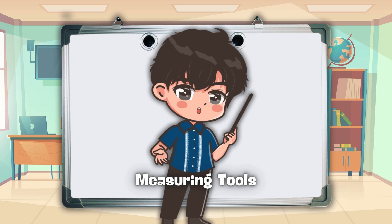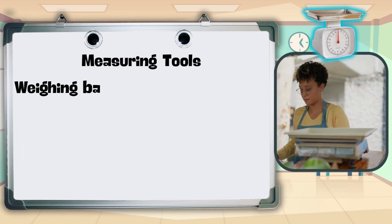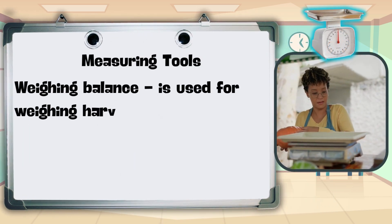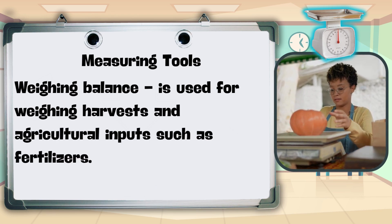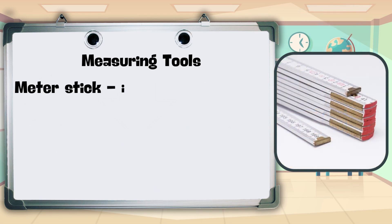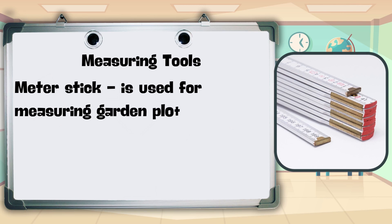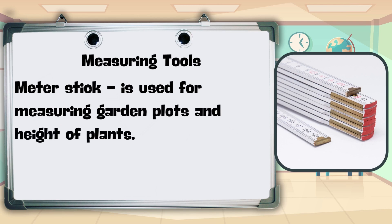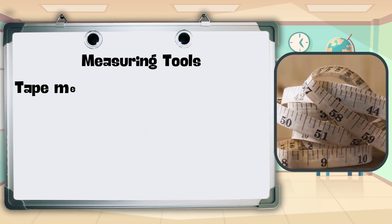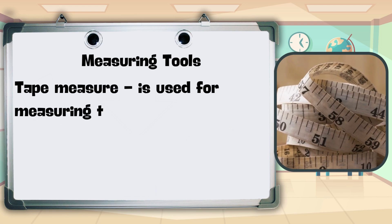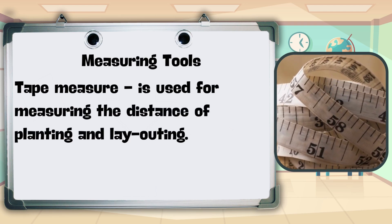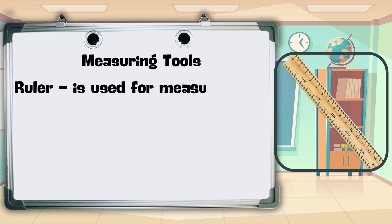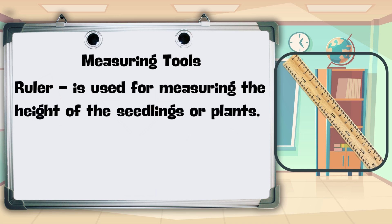For measuring tools: weighing balance — used for weighing harvests and agricultural inputs such as fertilizers; meter stick — used for measuring garden plots and height of plants; tape measure — used for measuring the distance of planting and layouting; ruler — used for measuring the height of the seedlings or plants.